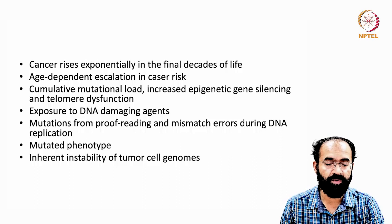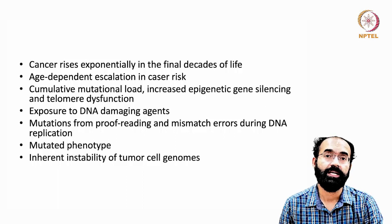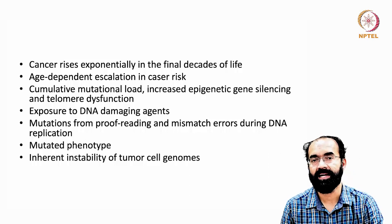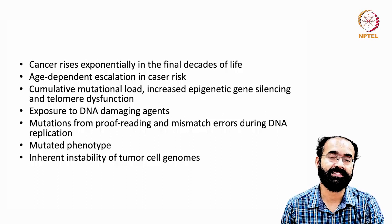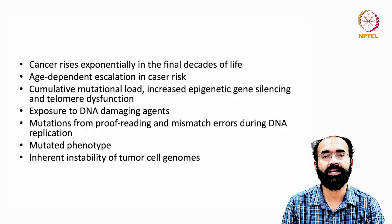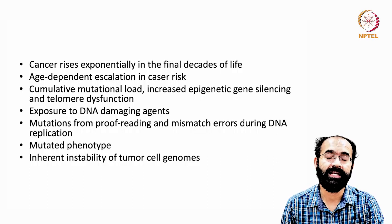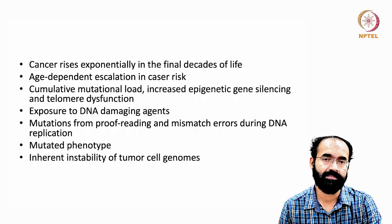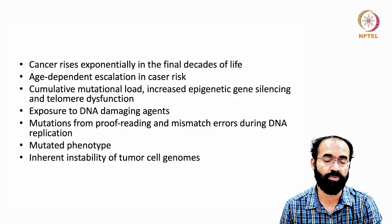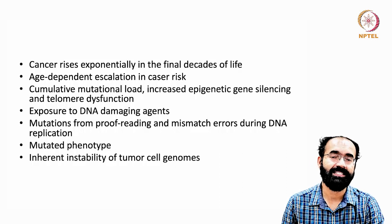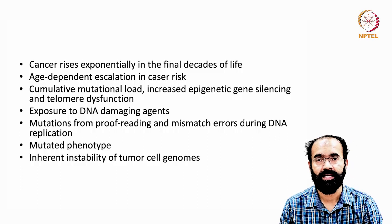Mutations can arise from proofreading and mismatch errors during DNA replication. Normally, DNA polymerase has proofreading activity — it degrades in the 3' to 5' direction while synthesizing, essentially an exonuclease activity that corrects errors in real time. The same enzyme can perform a backward reaction, erasing and re-synthesizing to prevent incorporation of wrong bases. RNA polymerase also has proofreading activity; only RNA-dependent RNA polymerases from some viruses lack it.